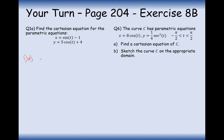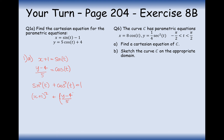Let's have a go at question 1a. Rearrange the first equation to x + 1 = sin(t), and for the second one: (y − 4)/5 = cos(t). Now replace these into sin²t + cos²t = 1: (x+1)² + ((y−4)/5)² = 1. Multiplying through by 25 clears the fraction and gives the final answer.